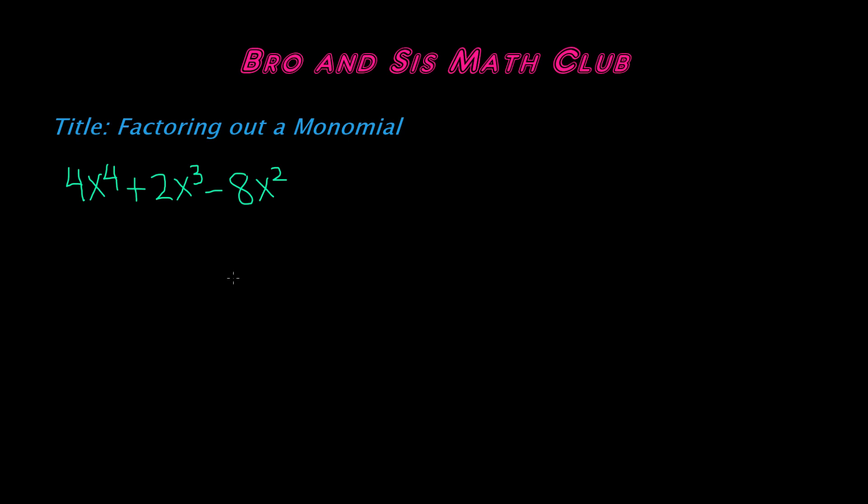From our previous videos, we know that a monomial is a single term that can be a real number, a variable, or it can be a product of a real number and one or more variables with whole number exponents.